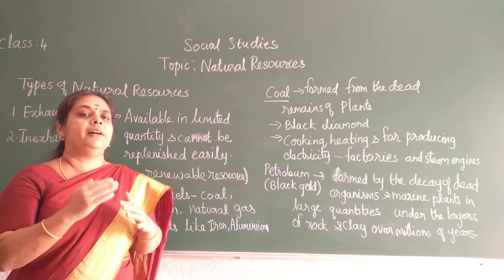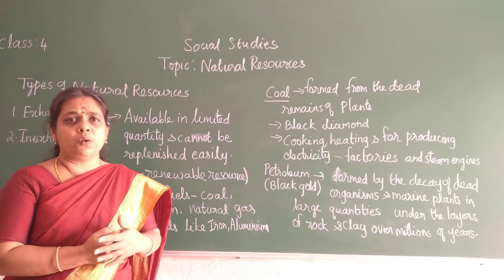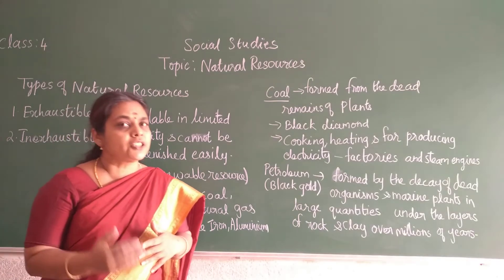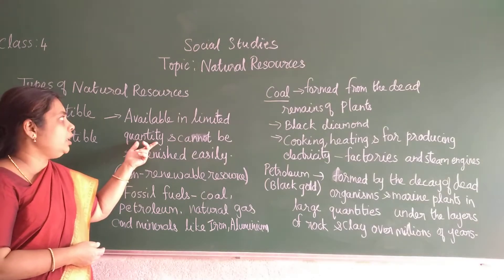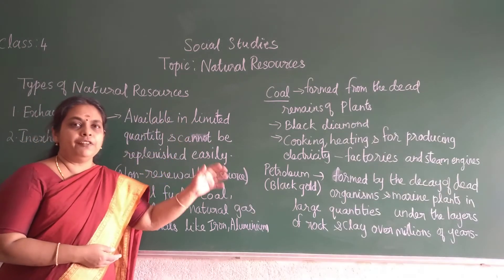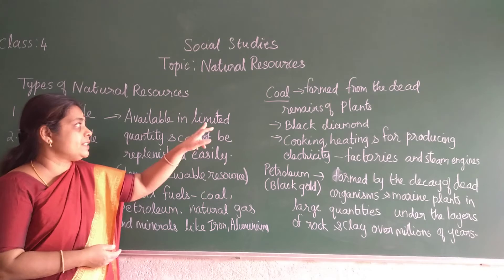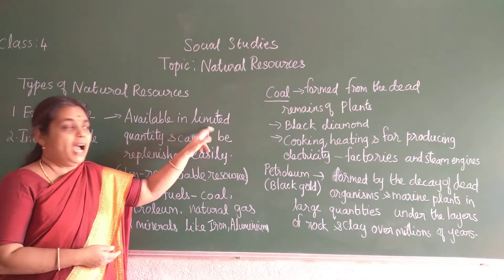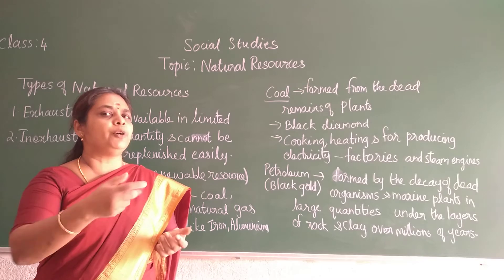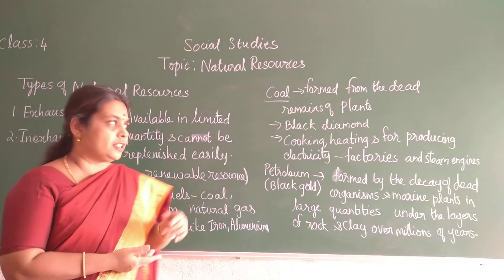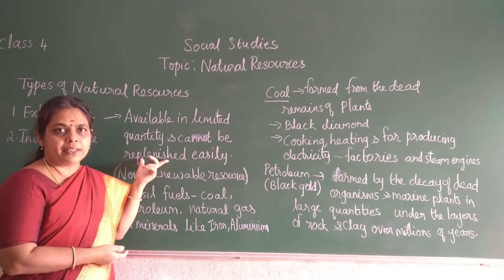Our earth was formed nearly millions of years ago. For the past hundred years only we have been maximally utilizing natural resources. These exhaustible resources are available in less quantity. If you take coal, petroleum, or any other fossil fuels, they are in less quantity. You cannot immediately form coal or produce petroleum within one month — that is the meaning of 'cannot be replenished easily.'